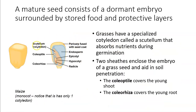This diagram is of a mature corn seed that consists of a dormant embryo — it's not really ready to develop into a full new plant — and it's surrounded by its stored food as well as several protective layers. In this particular group of monocot, specifically grasses, which corn is a type of, they have specialized cotyledons called a scutellum that absorbs nutrients during germination.